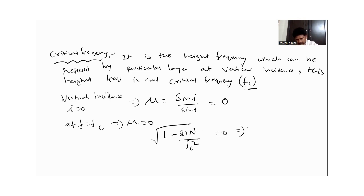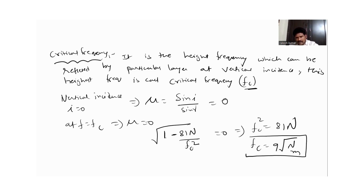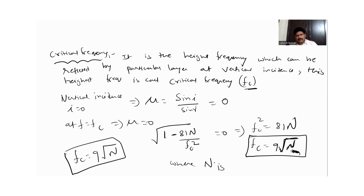At mu equal to 0, we have: 1 minus 81n divided by Fc squared equals 0. From this, Fc squared equals 81n. Therefore, Fc equals 9 times the square root of n, where n is the number of electrons per cubic meter.